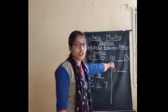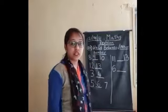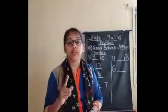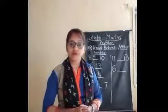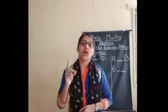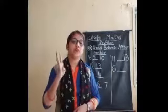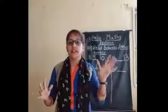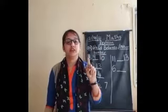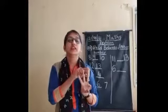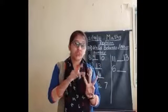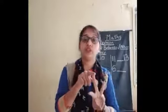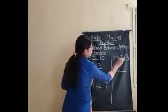Good. Now the next one is 11 blank 13. Again we will count and see which number comes between 11 and 13: 1, 2, 3, 4, 5, 6, 7, 8, 9, 10, 11, 12, 13. Which number comes between 11 and 13? 12. So we will write number 12 here.